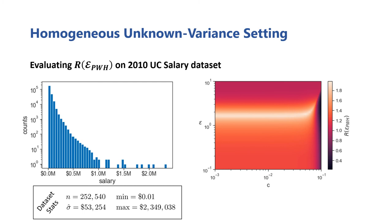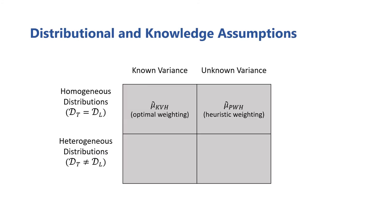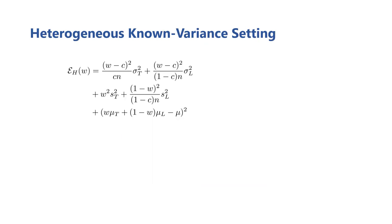Nearly the entire space shows a relative improvement of 1.3 or higher, approaching a factor of 2 at its peak. Because of this high performance, we can skip over exploring how it performs over the worst of the two baselines. At this point, we can move on to the heterogeneous distributions case. It turns out that here, the resulting conclusions for the known and unknown variance cases are similar, so for brevity, we'll discuss them together.